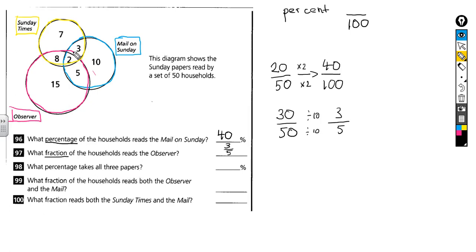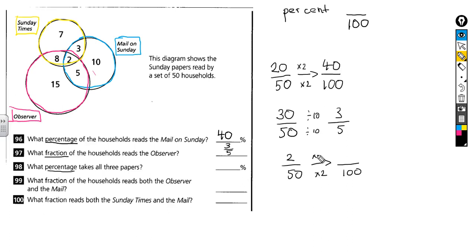What percentage takes all three papers? That's the overlap part — the two people stood in all three circles. That's 2 out of 50. To convert to a percentage, multiply both by 2: 2 times 2 is 4, so that's 4 out of 100 — 4 percent.